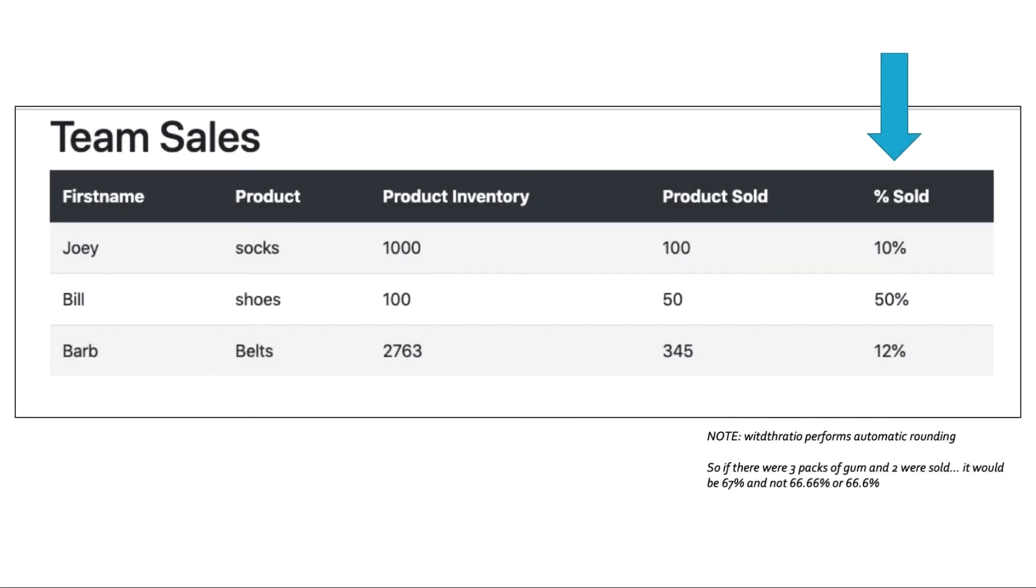This is how it gets rendered in our webpage. So let's stare at this a minute and see if we can figure this out. Let's look at the first line, the first record that comes back. Joey's the first name, products are socks, product inventory is 1000, and Joey sold 100 products, and we're seeing 10%. This is what we want. We want to know what percentage 100 is of 1000. In our case, it is 10%. Same for Bill, 50 of 100, 50%. And you can take out your calculator, 345 of 2763 is 12%. I'd like to point out, we're using this widthratio tag that we're going to examine in detail on the very next slide.